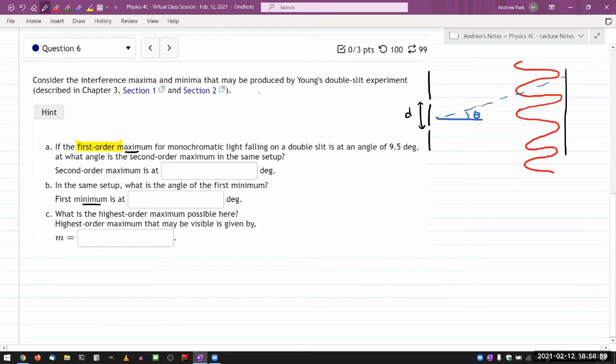Then these are the two conditions that you want to have in mind. For maximum, D times the sine of theta, the position of the maximum is equal to the order of interference times lambda. And for minimum, D times sine theta. And this M now should be a half integer, and I want to write it this way. M plus one half lambda. This way, M will, wait, actually, sorry, M minus one half.